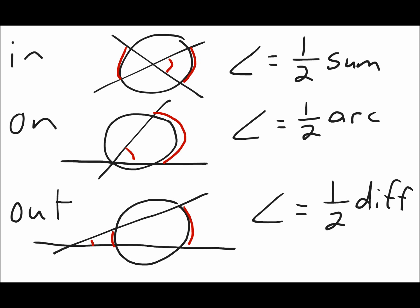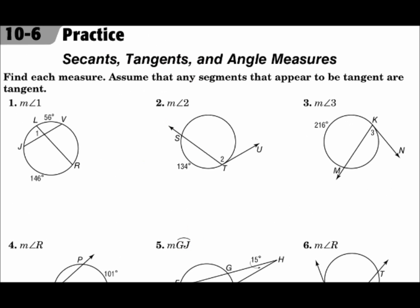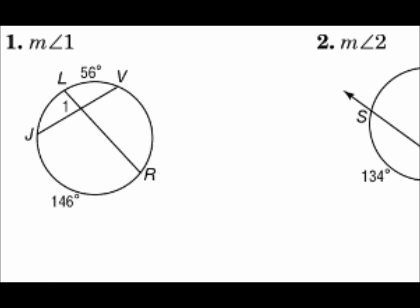Remember, for difference, do the larger one minus the smaller one. Find each measure. Assume that any segments that appear to be tangent are tangent. For the measure of angle one, the intersection is inside the circle, so I can find these angles using half the sum of those arcs.